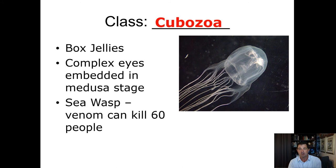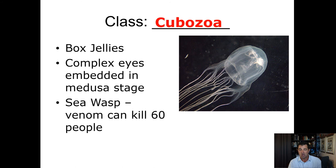The next is an unusual class called Cubozoa — these are what we call box jellies. They have complex eyes embedded in the medusa stage at the top of their body, and there are quite a few different species. One of the most famous is called the sea wasp, and the venom from it can kill 60 people.